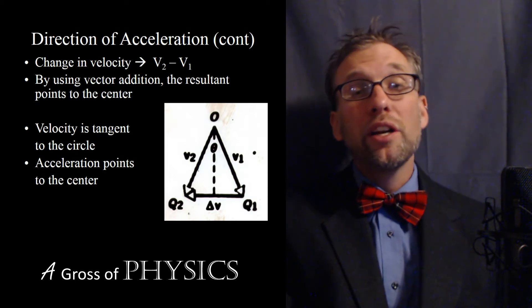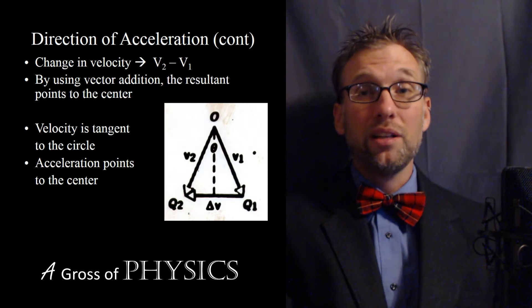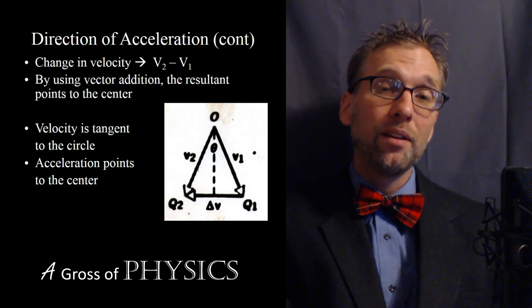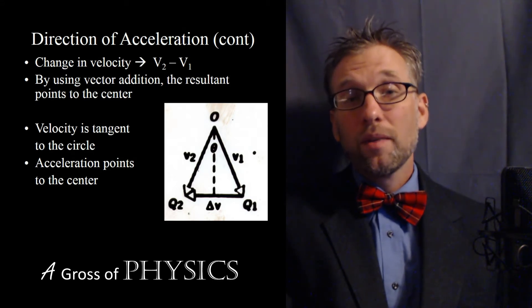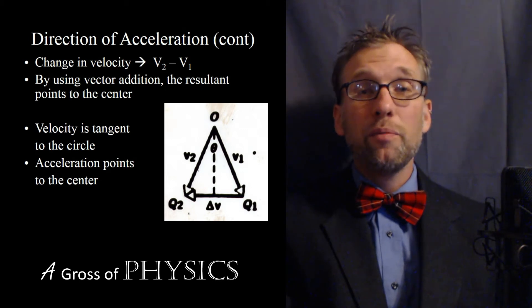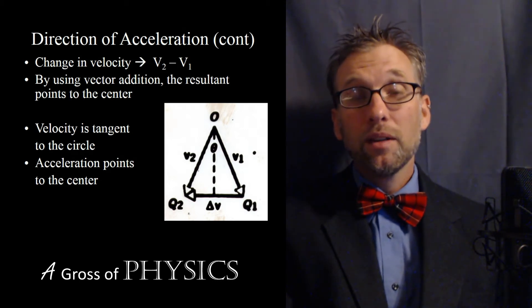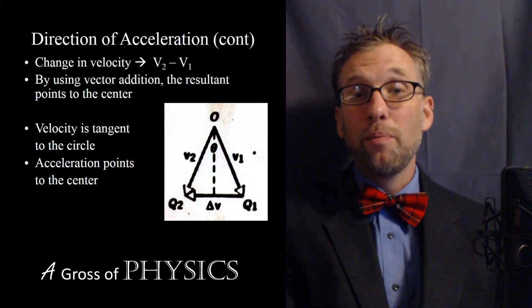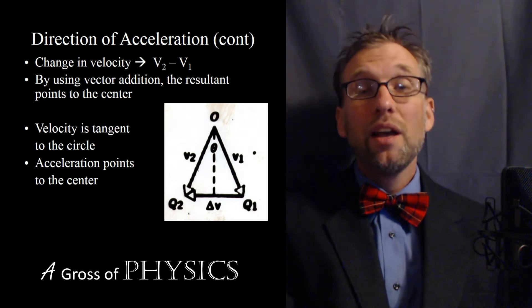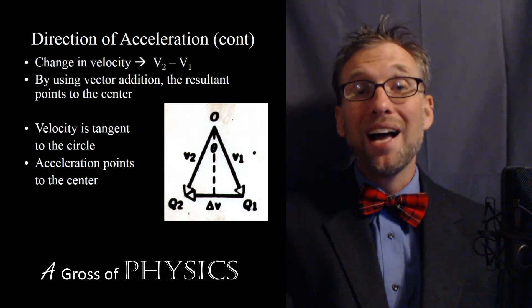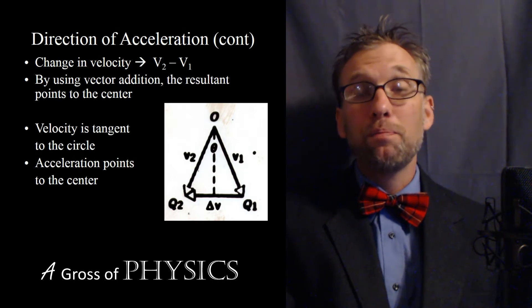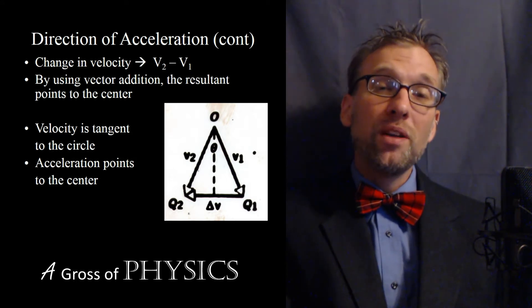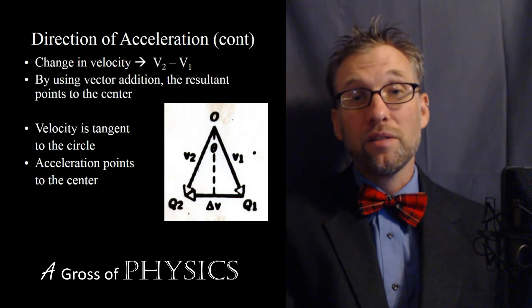We're always going to know the direction of a centripetal acceleration, and it's going to point to the center. So we don't have to worry about the vector velocity anymore — instead, we can look at speed. The other characteristics of circles include the radius, the diameter, and the circumference. The circumference is based on the radius or diameter: if you have diameter, it will be pi d; if you have the radius, it will be 2 pi r. The circumference will be important as we move forward in this section.